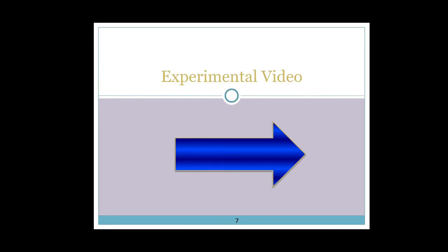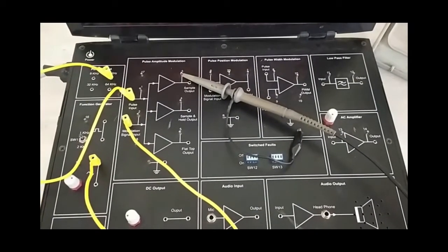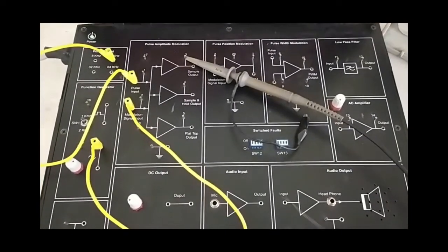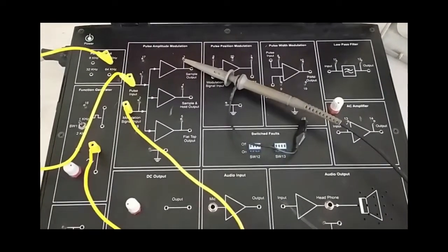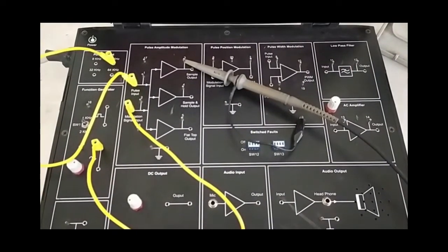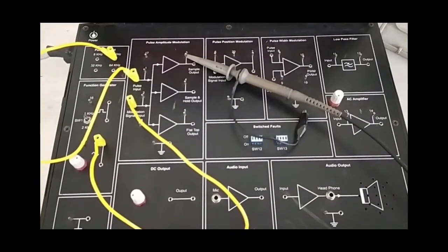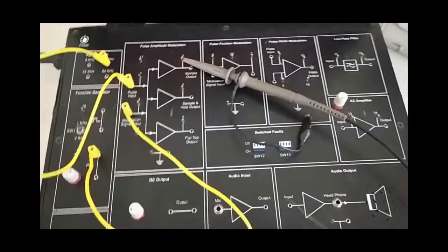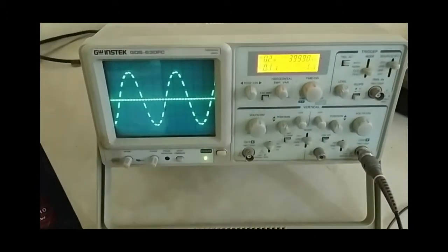Now, here is the experimental video. For the modulated output signal, the CRO probe is connected with the sample output portion of the kit, and you can see the natural sampling on the CRO screen as well.